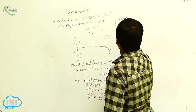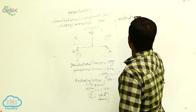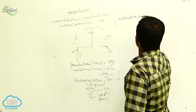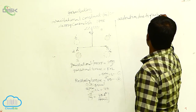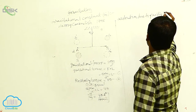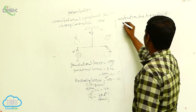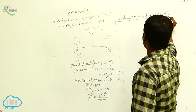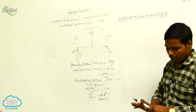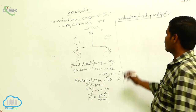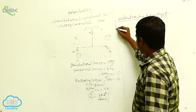Acceleration due to gravity — that is small g on Earth. This acceleration due to gravity on Earth we can calculate using the following derivation.